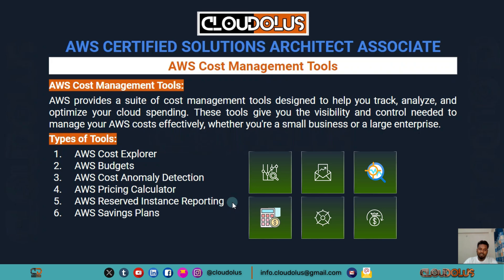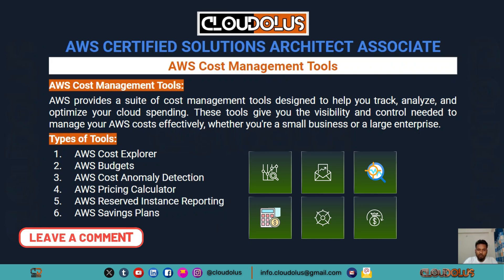AWS Reserved Instance Reporting and Savings Plans — in this savings plan, we can purchase and acquire AWS accounts based on the environment load by application, and we can control and optimize. This is the 6th AWS Cost Management tool.